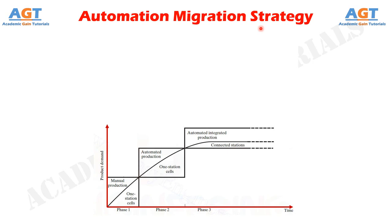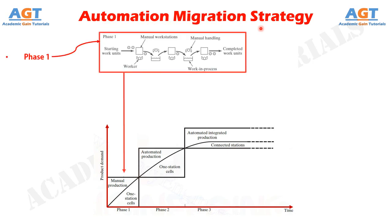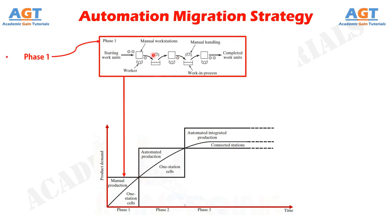Phase 1: Manual production using single station manned cells operating independently. This is used for introduction of the new product for reasons already mentioned — quick and low cost tooling to get started.